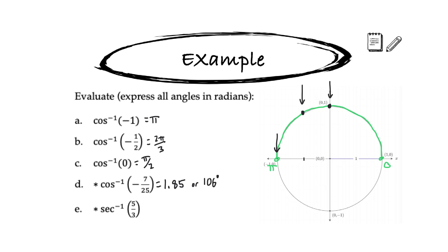That makes sense if we think of negative 7/25 as about negative 0.28, placing us at around 106 degrees. For secant inverse of 5/3, there is no secant inverse button on most calculators. Since secant has the reciprocal ratio of cosine, we rewrite this as cosine inverse of the reciprocal ratio, 3/5. Note that we're reciprocating the ratio, not cosine inverse itself. In radians, that gives about 0.93 radians, or about 53 degrees, which makes sense since 3/5 is about 0.6.